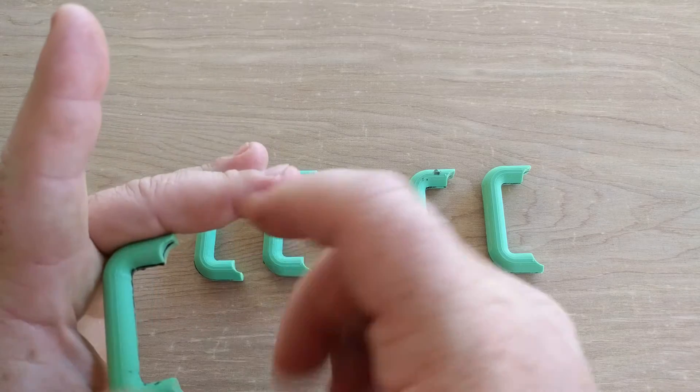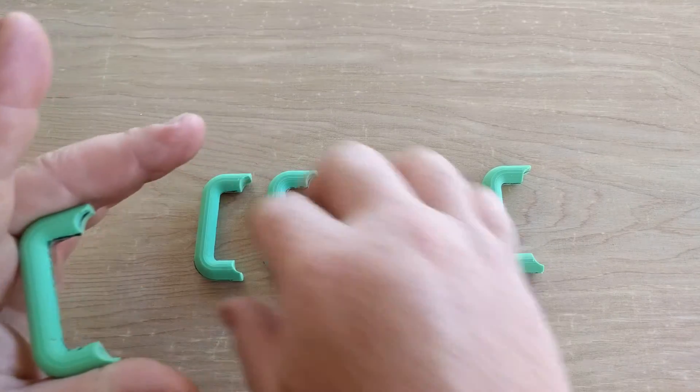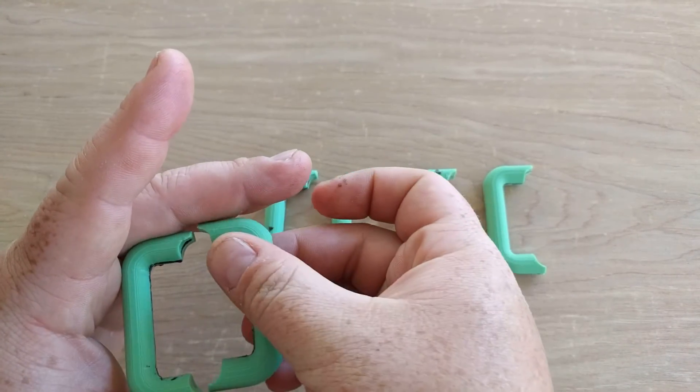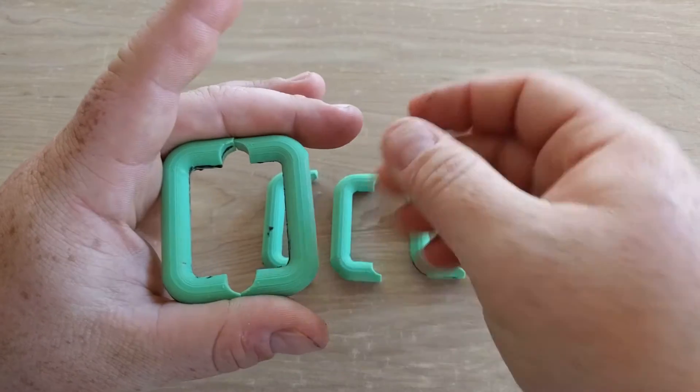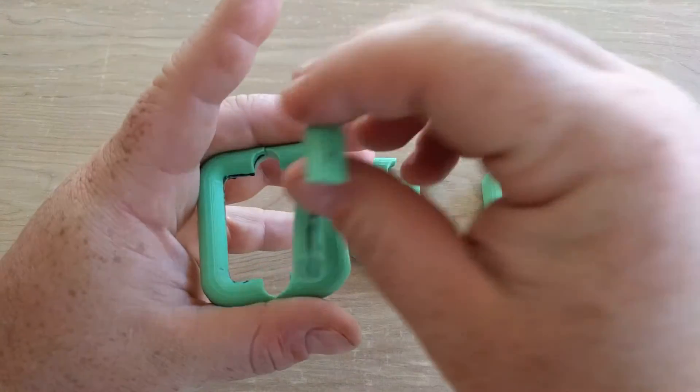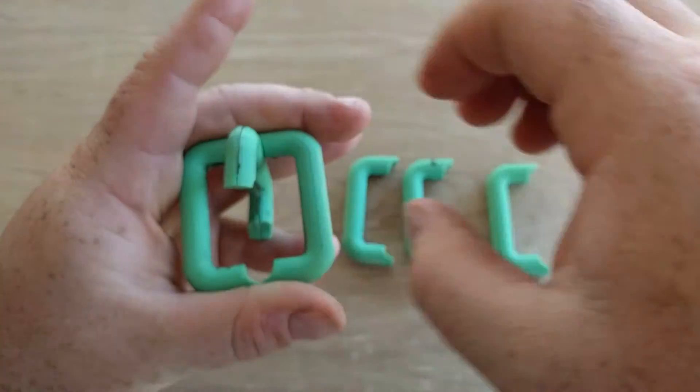What you do is you get one piece and you put it between your pointer finger and your thumb, and then you get another piece you put on the opposite side right there. And now I actually will get my pinky down here and I will support the bottom piece right there.